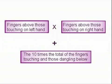The three steps to using your fingers as a calculator for the six, seven, eight and nine times tables are illustrated here. Remember, the fingers above those touching on the left hand times the fingers above those touching on the right hand are added together to the two fingers touching and any dangling below, counting them as tens.